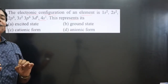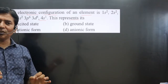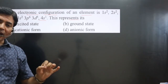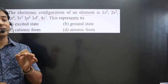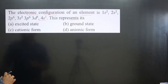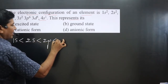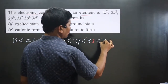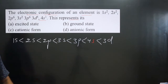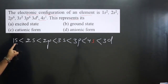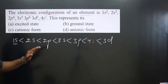Whenever the electronic configuration is given, always check whether this electronic configuration follows the Aufbau principle or not. According to this principle, filling of electrons in orbitals is done in the increasing order of their energy: 1s, 2s, 2p, 3s, 3p, 4s, 3d. Lower energy orbitals must be filled completely before filling the higher energy orbitals.